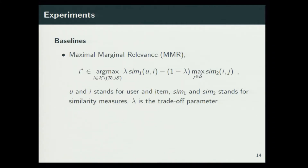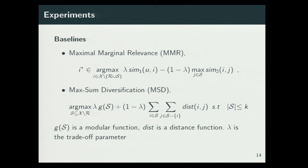With this greedy algorithm, we show the experimental results. We chose two baselines. The first is called Maximal Marginal Relevance (MMR), which selects items based on an objective function where similarity-one is the similarity between a user and an item, similarity-two is the similarity between items, and lambda is the trade-off parameter. The second is Maximum Diversification, where the objective for selecting an item has a modular function part and a distance function part. Both baselines are based on the scalarization principle, and for different values of lambda we get different relevance-diversity tradeoffs.